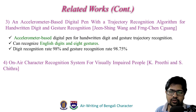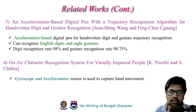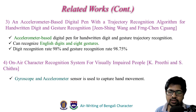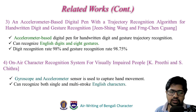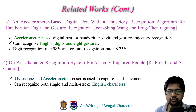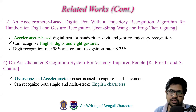Another work is on an air character recognition system for visually impaired people. In this work, the authors used gyroscope and accelerometer sensors to capture hand movement, and using this hand movement data the model can recognize both single and multi-stroke English characters. Due to time constraints, I have mentioned only a few related works here; there are also other related works listed in the reference section.